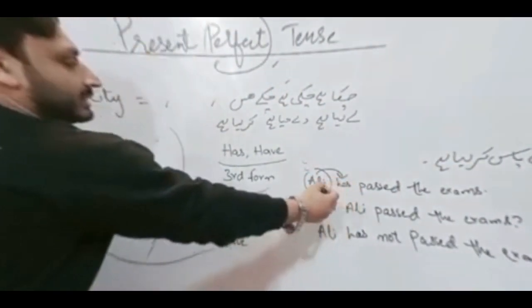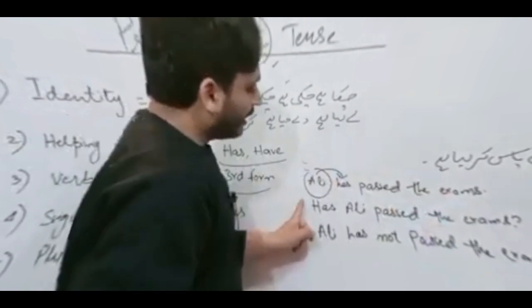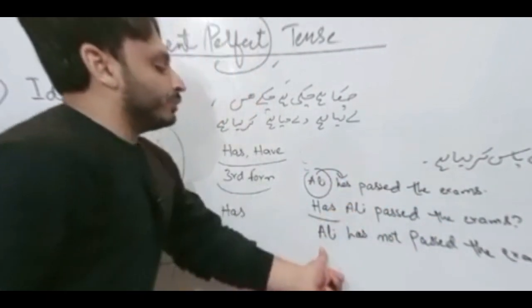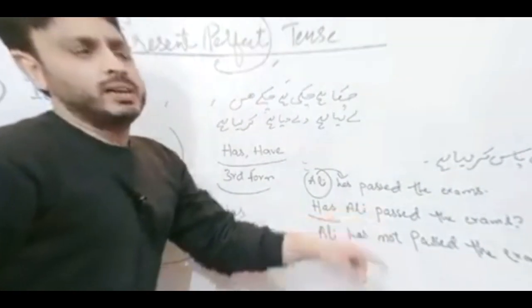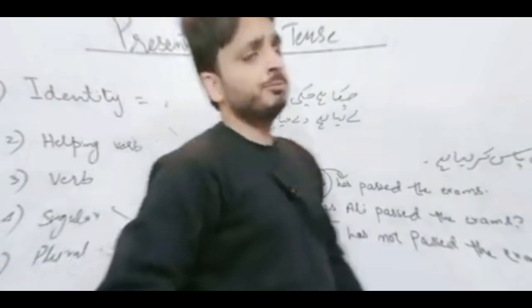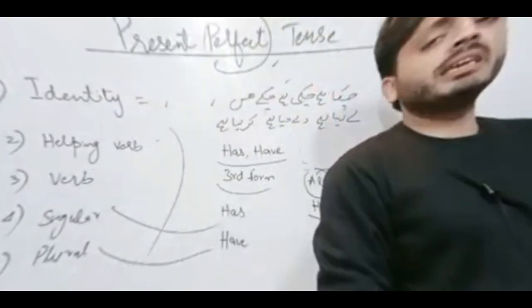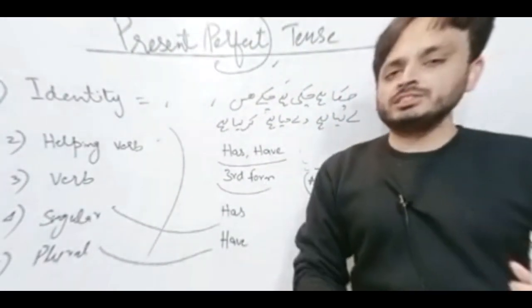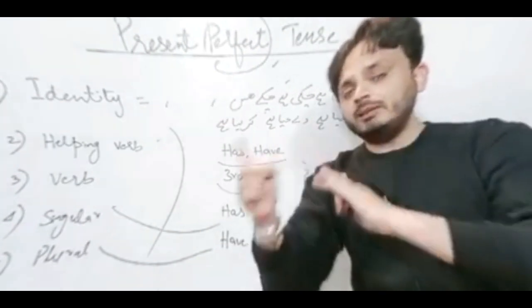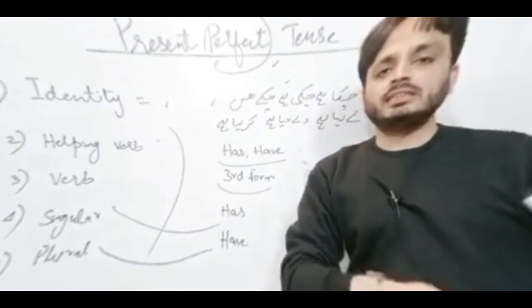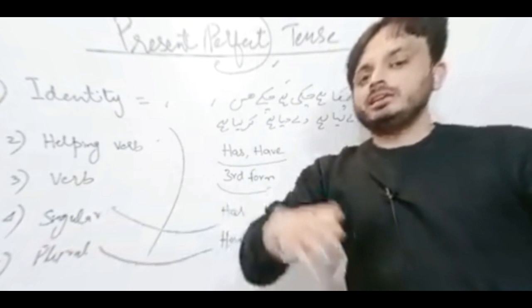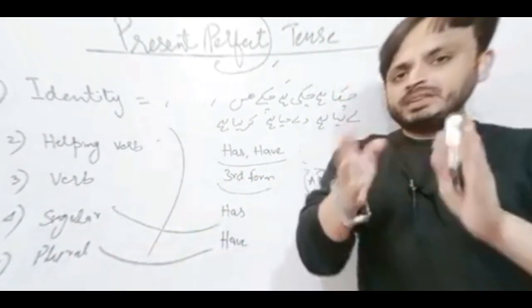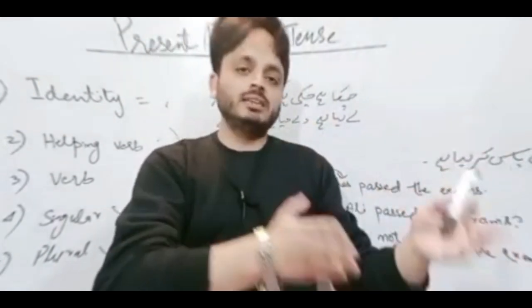Since Ali is singular, we are using 'has': Ali has passed the exam. For making interrogative, we will use: Has Ali passed the exam? Remember this point — it is a universal rule in all active or passive tenses: we have to bring only the helping verb to the start of the sentence. For example: I have done → Have I done? He will go → Will he go? He is going → Is he going? Simply bring your helping verb to the start and it will become interrogative.